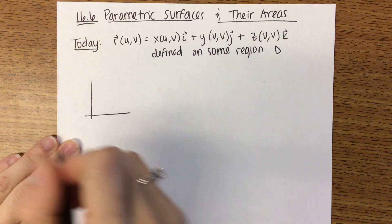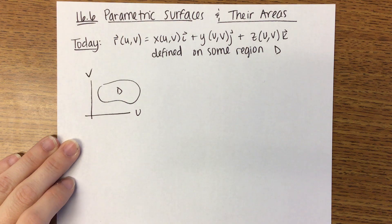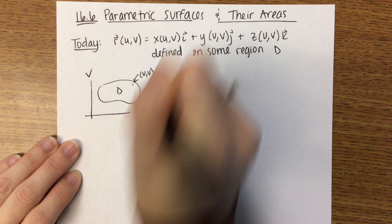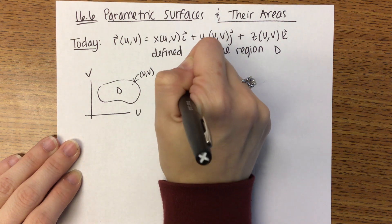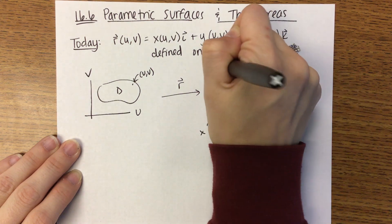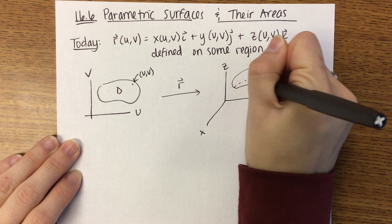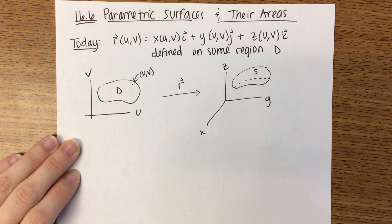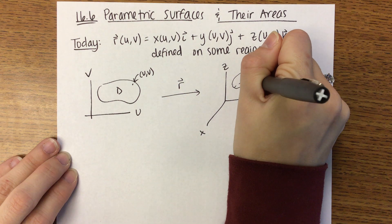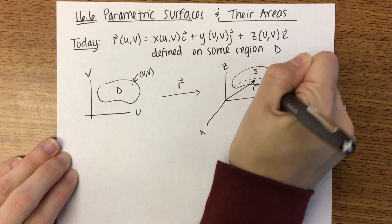You'll have some function X of U,V times I plus some function Y of U,V times J, plus some function Z of U,V times K. We say this is defined on some region D. You have some region D in terms of U and V. Any point in that region is U,V. R then will be when you graph this three-dimensionally in terms of X, Y, and Z.